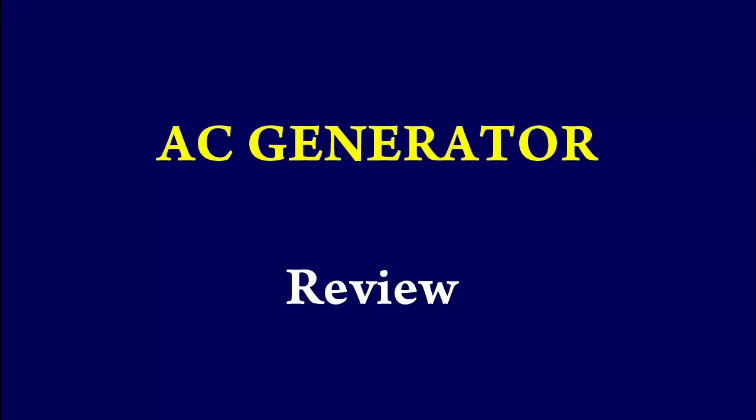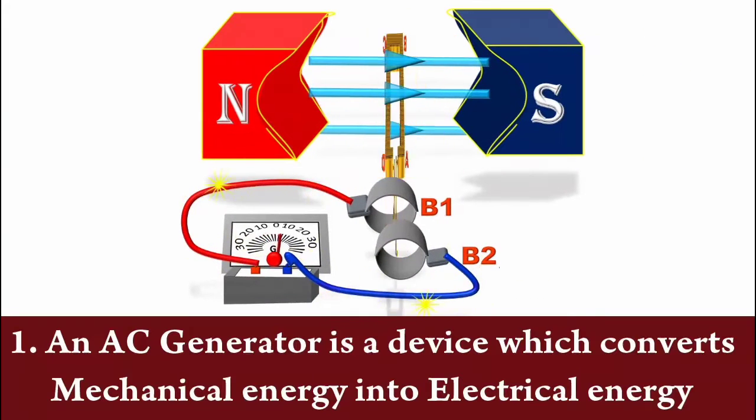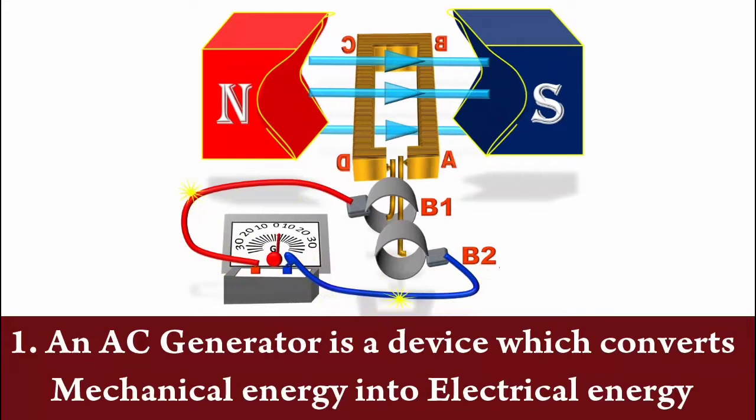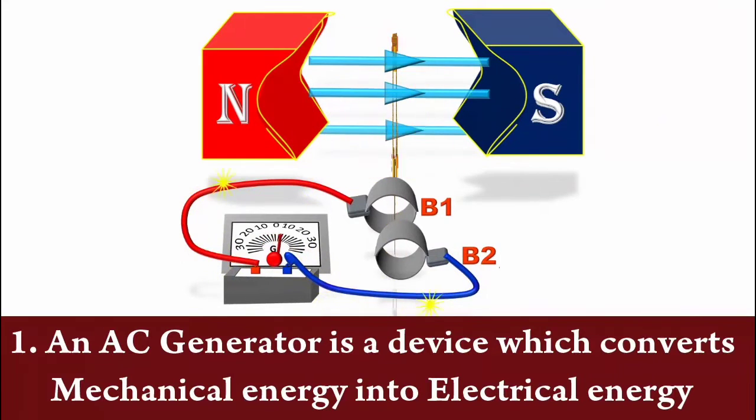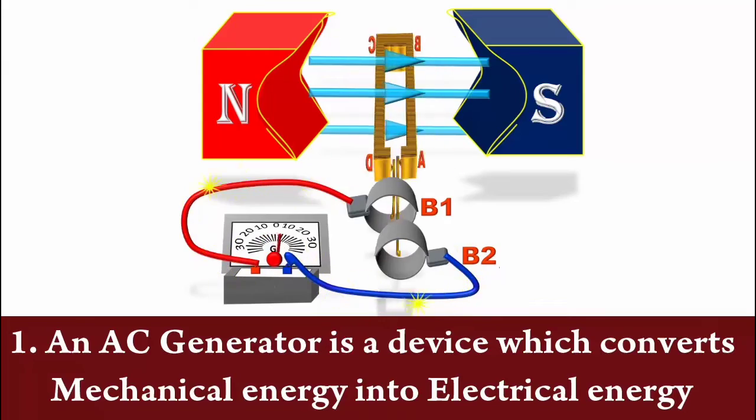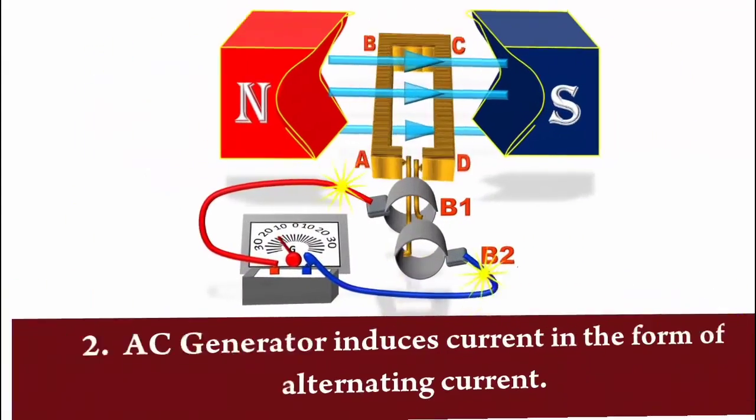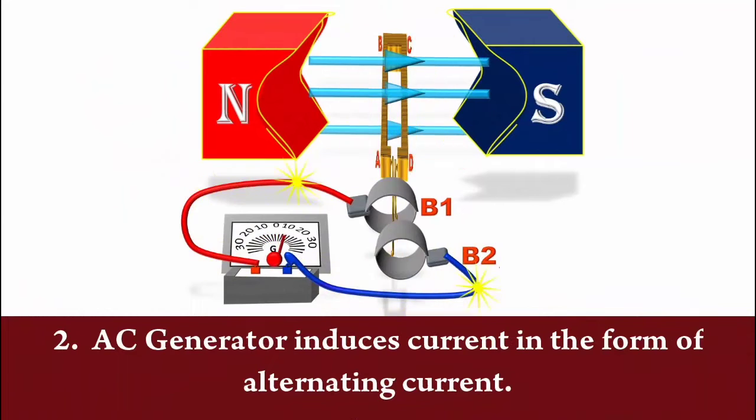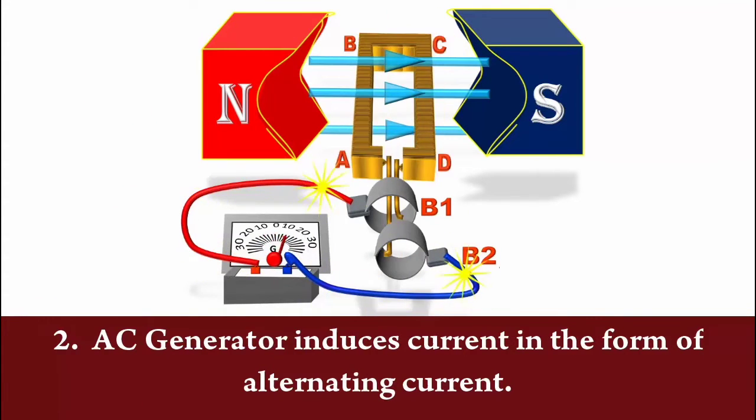Let's review. AC generator is a device which converts mechanical energy into electrical energy. AC generator induces current in the form of alternating current.